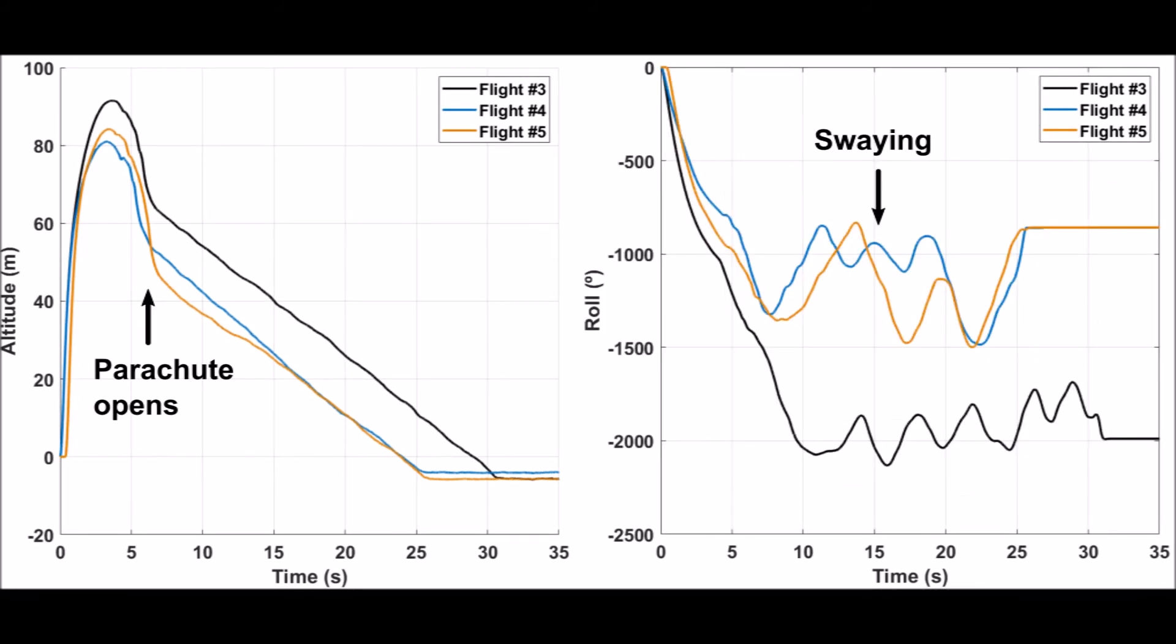The roll data from the test flights tells us that the rocket always spins in the same direction. After the parachute opens, there are oscillations in the roll angle because of the swaying motion about the shock cord.